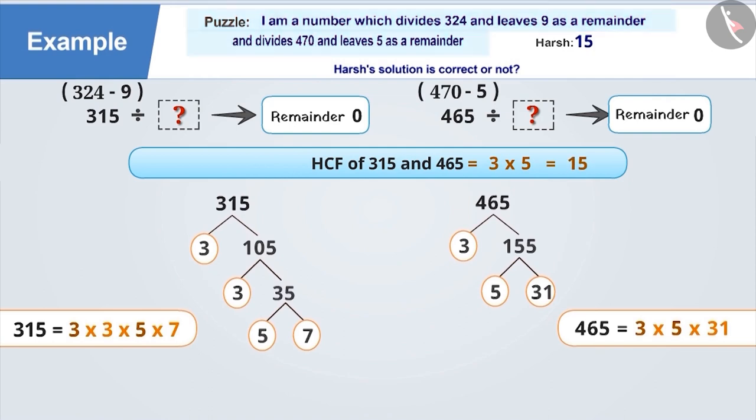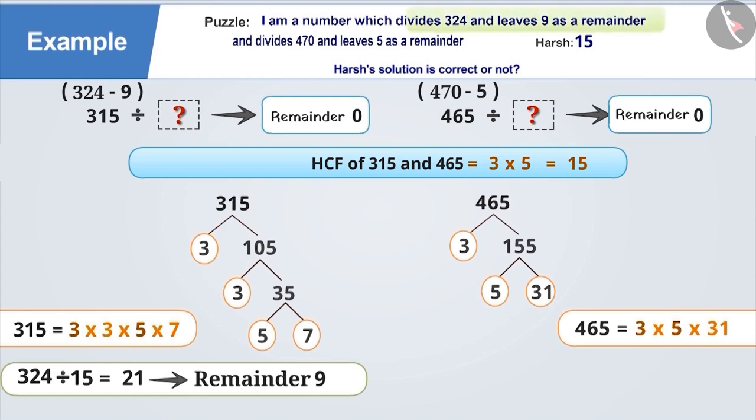Let's check our answer. If we divide 324 by 15, we get 21 with a remainder of 9, which is correct according to the riddle. Similarly, if we divide 470 by 15, we get 31 and a remainder of 5, which is again correct according to the riddle.